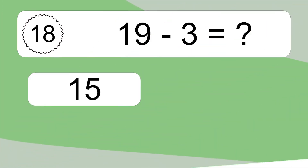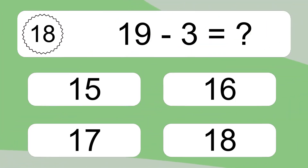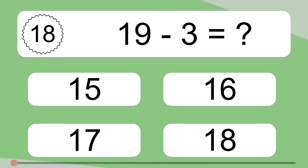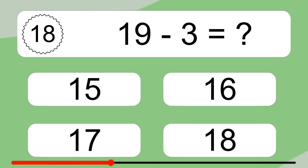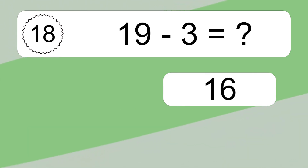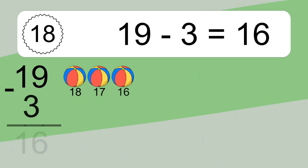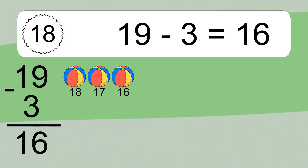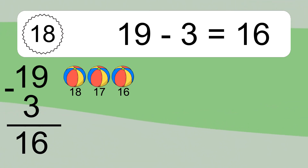19 minus 3 equals what? 19 minus 3 equals 16. Let's count it: 18, 17, 16.